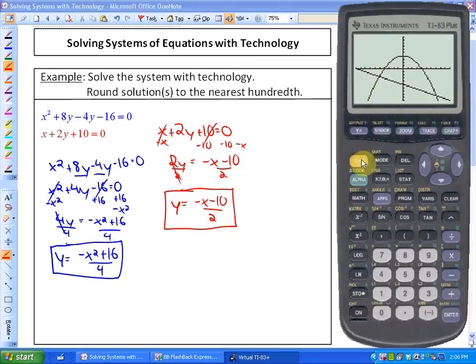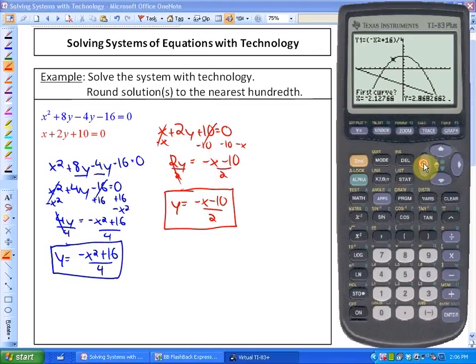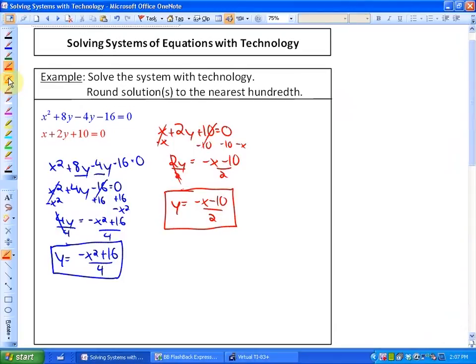The way that we find intersections using technology is by pressing second and trace, which gets into the calculate menu, and we want to find out where they intersect. Press 5, move the trace bug close to the first intersection, and press enter enter enter. First curve, second curve, guess, and there's my solution: to the nearest hundredth is negative 5.08 and negative 2.46. So that's one of my solutions.